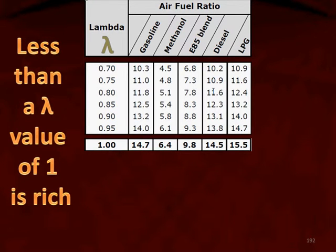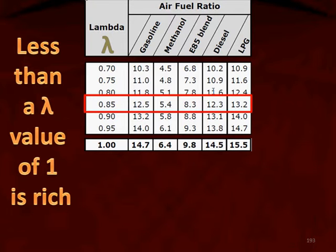If we have a lambda value less than one, that means we're running rich. At a lambda of 0.85, gasoline would be at a rich mixture of 12.5 parts air to fuel. E85 at that same lambda value would be a rich mixture of 8.3. So different fuels indicate different air fuel ratios at the same lambda value.